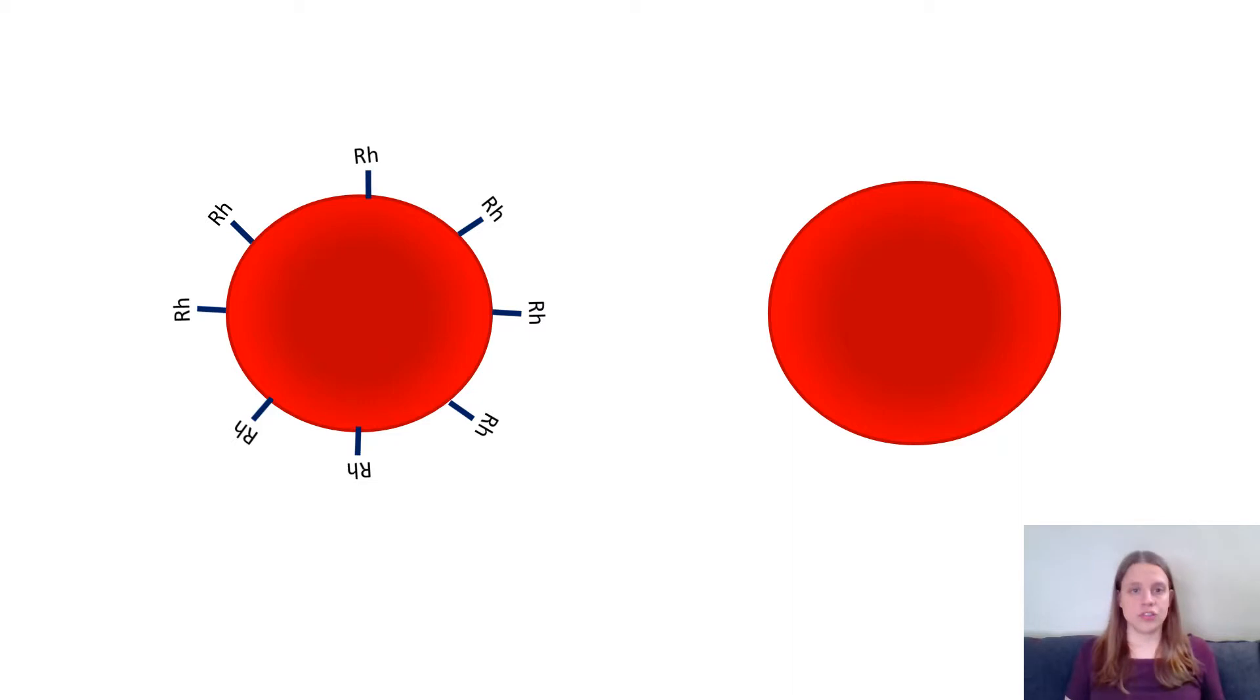So RH factor is another common antigen and that's where the positive and negative part of blood typing comes in. So if someone has the RH antigen we say they're positive. So this blood type here is O positive because they have the RH factor but they don't have A or B. And then the other blood cell is O negative because it has absolutely zero antigens not even the RH factor.